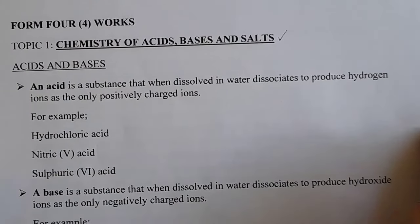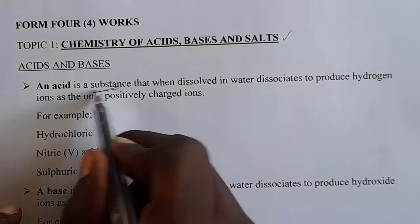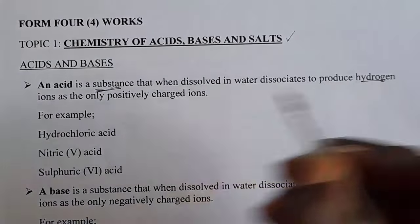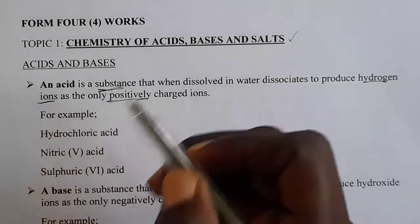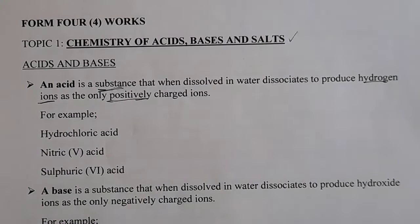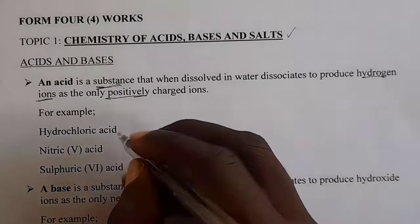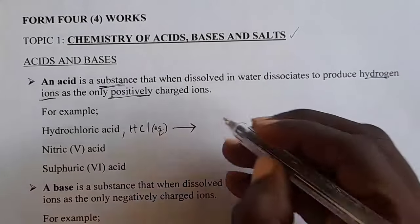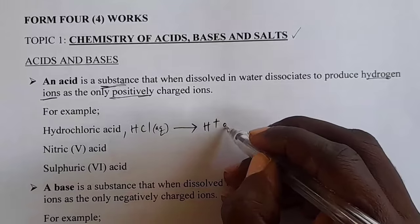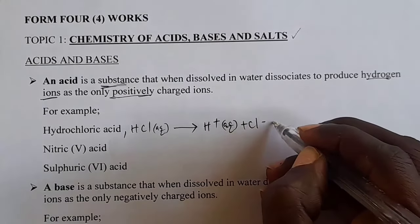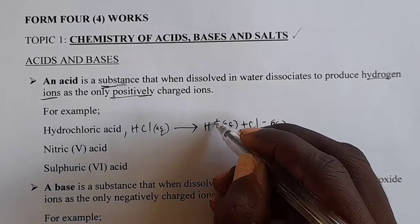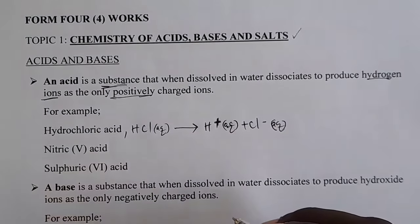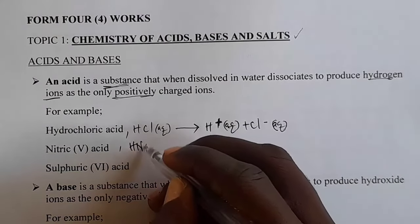What is an acid? An acid is a substance that, when dissolved in water, dissociates to produce hydrogen ions as the only positively charged ions. For example, hydrochloric acid — we write it as HCl. When it dissolves in water, it dissociates producing hydrogen ions and chloride ions. If you check the ionic equation, hydrogen ions are the only positively charged ions, so hydrochloric acid is an acid.